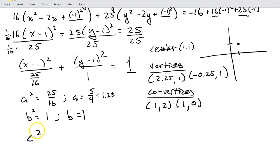In order to find the foci, I'm going to have to find c. So c² is a² - b², so that's going to be 25/16 - 16/16 because that's just my 1, so that's going to be 9/16. So c is going to be 3/4.